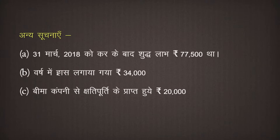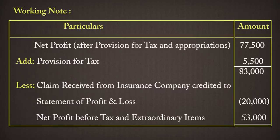In this question, we need to prepare cash flow from operating activities. For this, we first need net profit before tax and extraordinary items. Since it is not directly given, we need to prepare a working note. We will first write net profit after provision and tax and depreciation, which is given as Rs. 77,500 under other information.